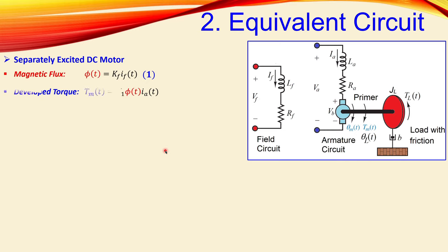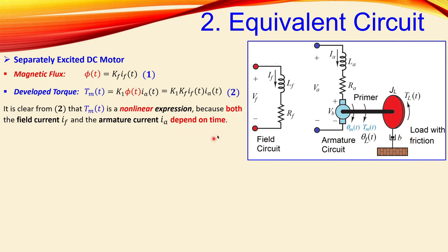The developed torque is given by T_m = k_1 · φ_f · i_a, where k_1 is a constant, φ_f is the magnetic flux, and i_a is the armature current. Substituting equation (1) for φ_f gives equation (2): T_m = k_1 · k_f · i_f(t) · i_a(t). This is a nonlinear expression because both i_f and i_a are functions of time being multiplied — it is not just one of them.